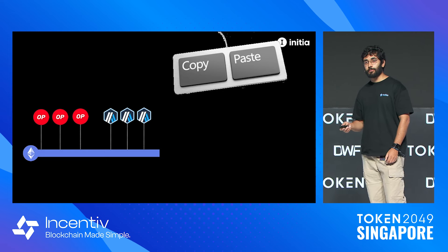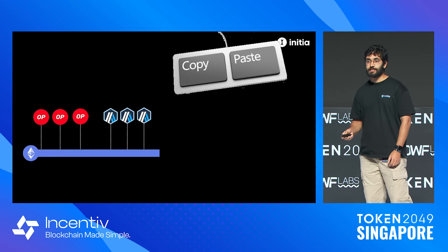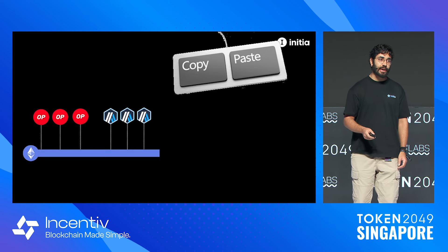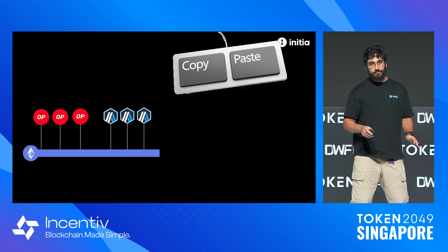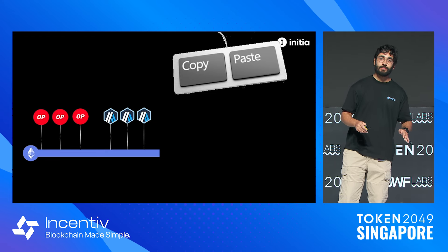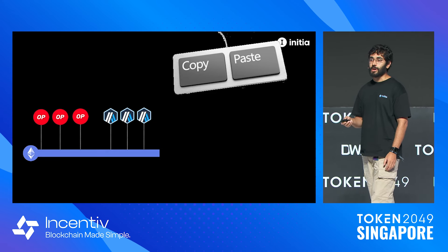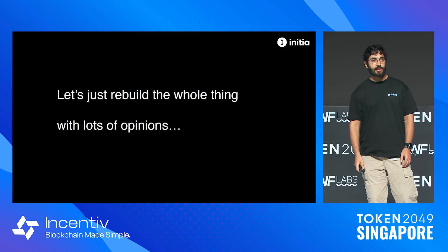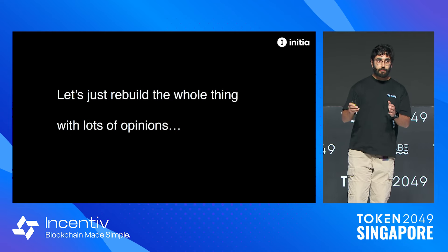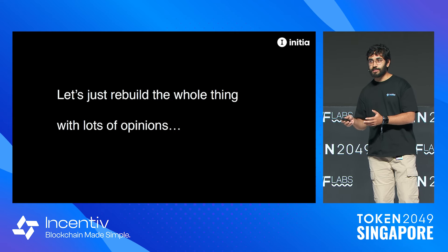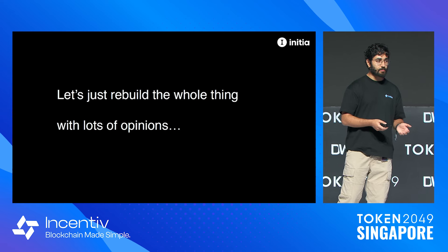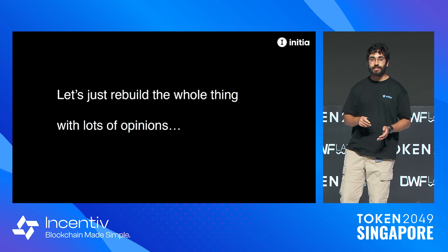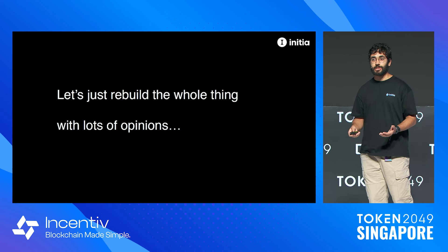The problem with Ethereum rollups is you get the exact same copy-paste fork every single time you build on the OP stack or Arbitrum Orbit — they're all literally exactly the same except for the smart contracts on top. So it's not the most flexible design. At Initia we decided there are good bits of both: the flexibility of Cosmos and the ease of launching rollups. So let's rebuild the whole thing with a very opinionated design on how multi-chain networks should actually exist.